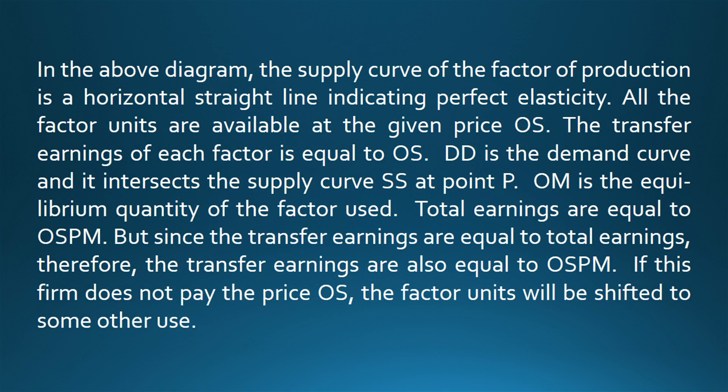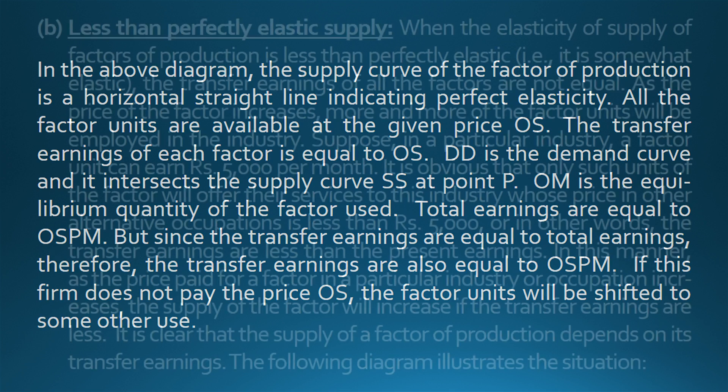In the above diagram, the supply curve of the factor of production is a horizontal straight line indicating perfect elasticity. All the factor units are available at the given price OS. The transfer earnings of each factor is equal to OS. DD is the demand curve and it intersects the supply curve SS at point P; OM is the equilibrium quantity of the factor used. Total earnings are equal to OSPM. But since the transfer earnings are equal to total earnings, the transfer earnings are also equal to OSPM. If this firm does not pay the price OS, the factor units will be shifted to some other use.